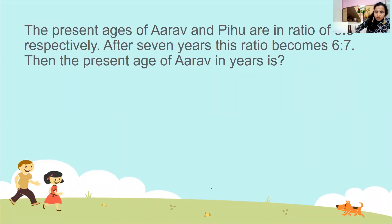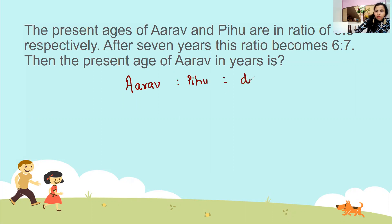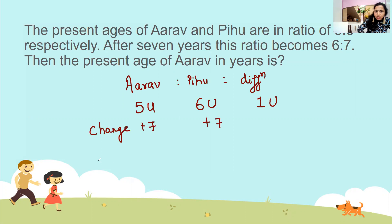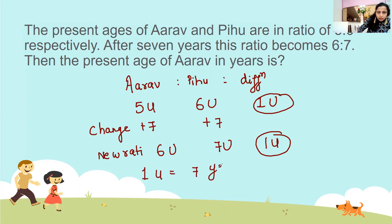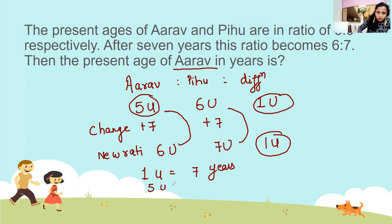Let's see another example. The present age of Araf and Piho are in the ratio 5 to 6 — so 5 units and 6 units, difference is 1 unit. After seven years the ratio becomes 6 to 7 — so 6 units and 7 units, difference is still 1 unit. The difference is constant, so 1 unit equals 7 years. They are asking the present age of Araf, which is 5 units — 5 times 7 = 35 years. Done.